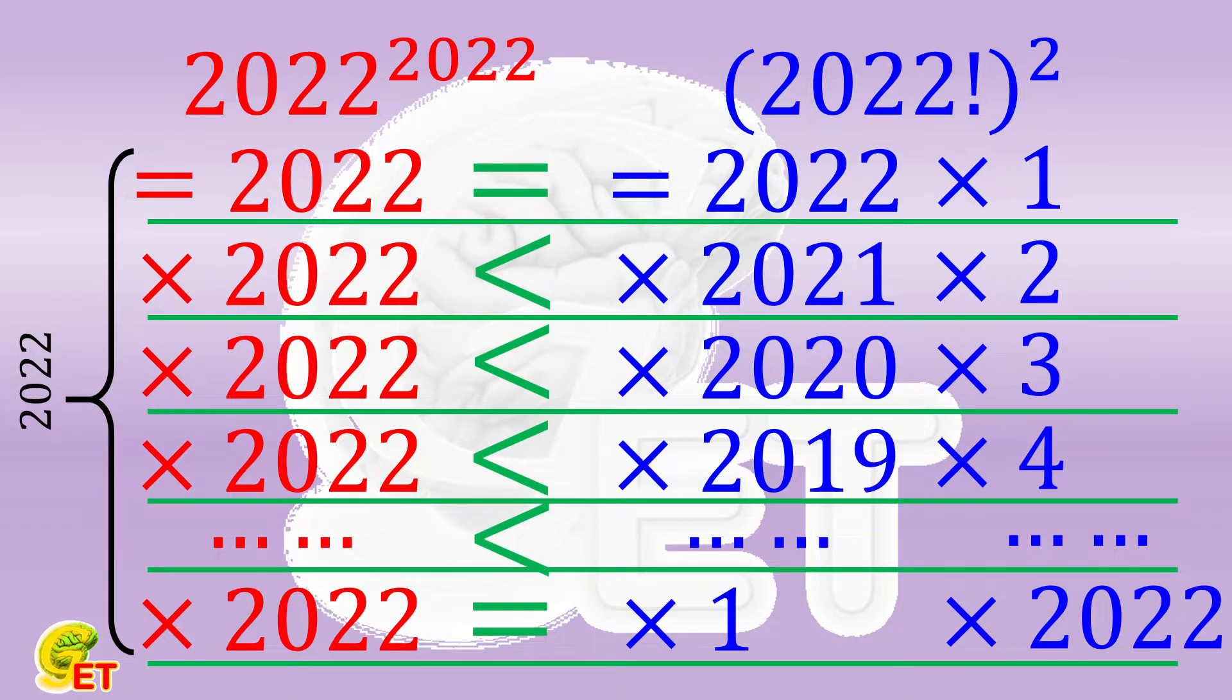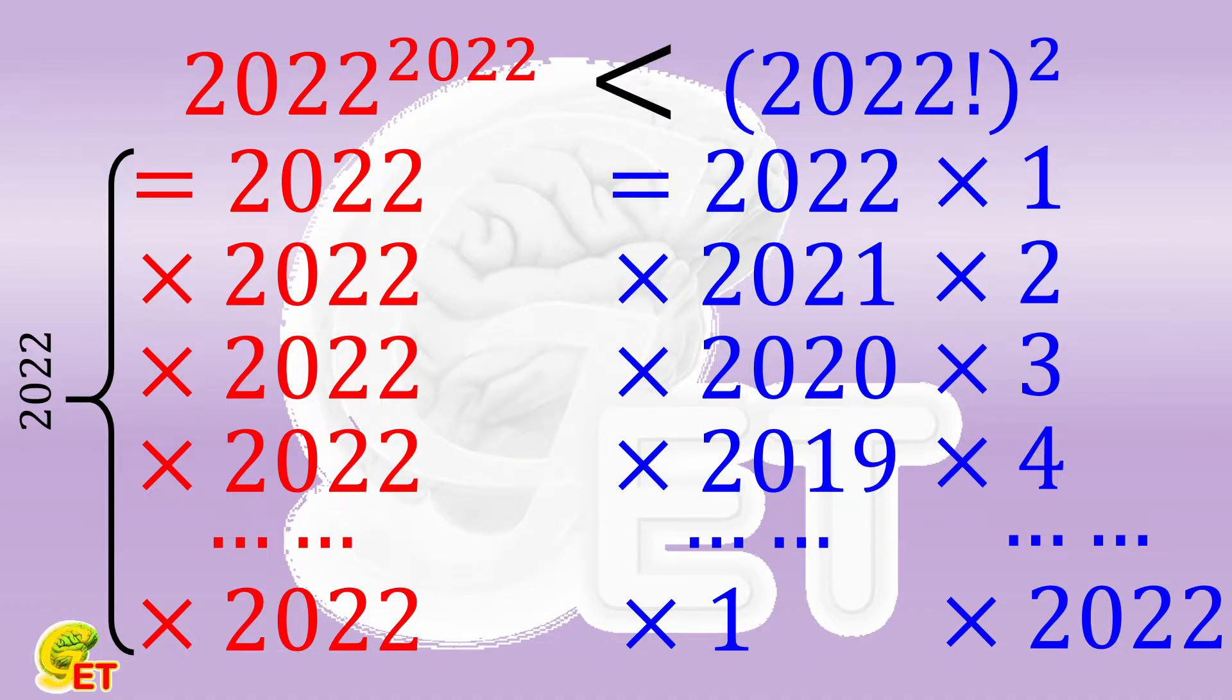Therefore, 2022 to the 2022 power is smaller than the square of factorial of 2022.